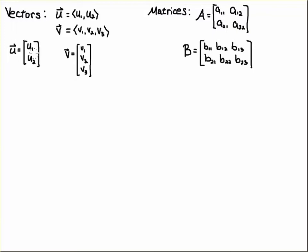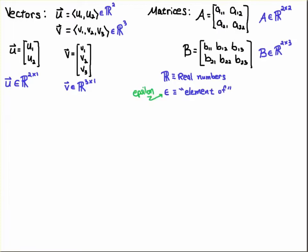Now we could—this would be u11 and this would be u21, this would be v11, v21, v31—but oftentimes we suppress the second subscript.